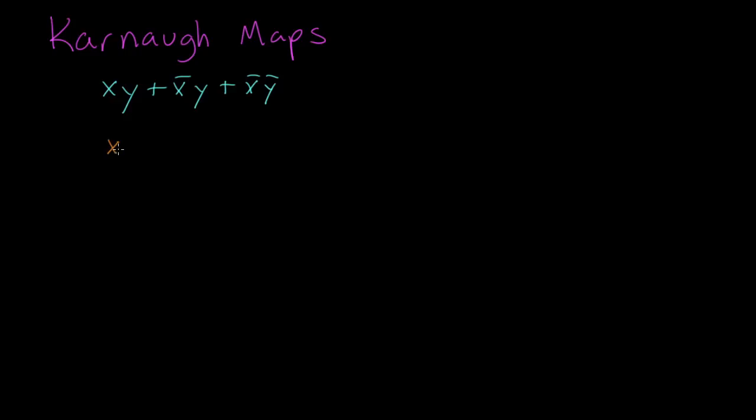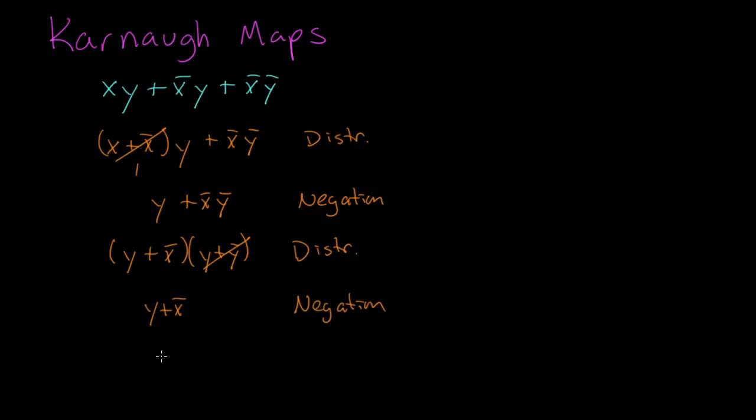Now you could do some transformations with Boolean algebra like doing distributive and then negation to cancel out one of the terms and then the other distributive and then negation again to arrive at the final answer. So we know that this expression simplifies to y or not x.